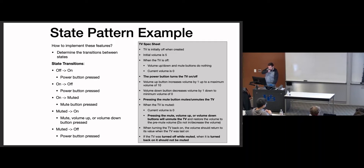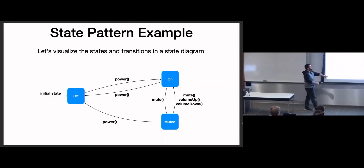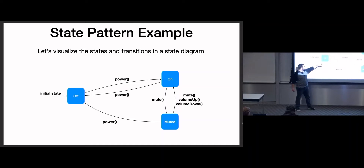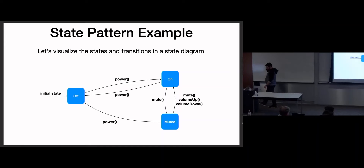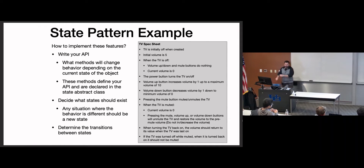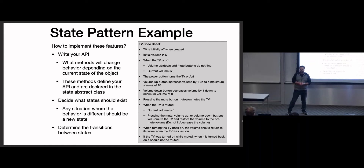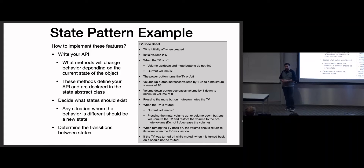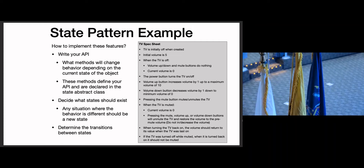Those are the state transitions. The state diagram shows: initially off, power changes between on and off, muted power goes to off, and then mute/unmute functionality. This is my recommended approach for tackling a state pattern question — the same approach for Task 3 of the homework. API is done for you. Then: which states exist, how many, what's the behavior in each, and how do you transition between them.